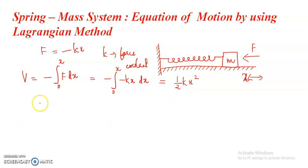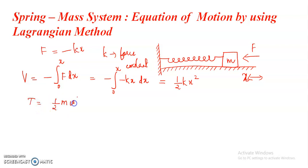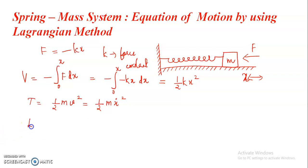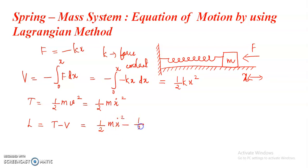Now the kinetic energy of the system: since the mass M is moving, there will be kinetic energy. So kinetic energy T equals half M times V squared. But we know that velocity V equals X dot, so it is equal to half M X dot squared. Now we can find the Lagrangian using the famous equation L equal to T minus V, that is equal to half M X dot squared minus half KX squared.